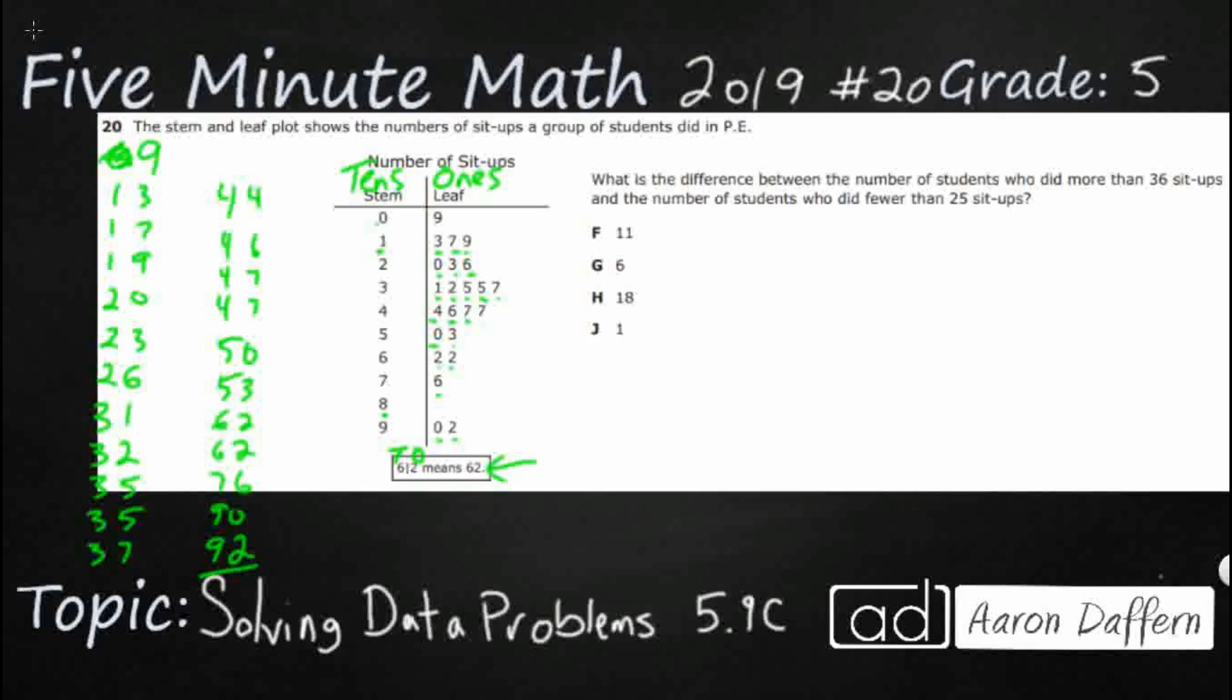So, my smallest number and my biggest number are right there, 9 and 92.